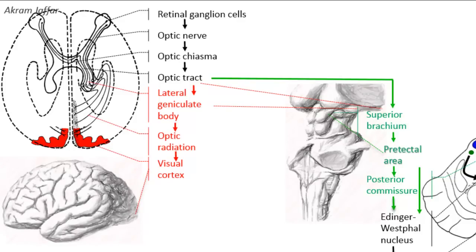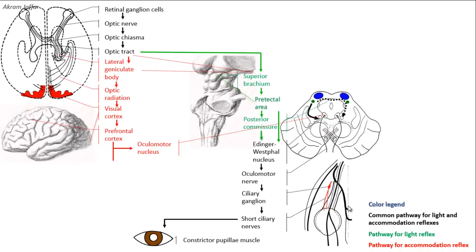The visual cortex is not required for the light reflex pathway, but because the accommodation reflex requires image analysis, the cerebral cortex must be involved as mentioned earlier. Impulses from the visual cortex pass to the prefrontal cortex, from which fibers pass through the internal capsule to reach the midbrain.